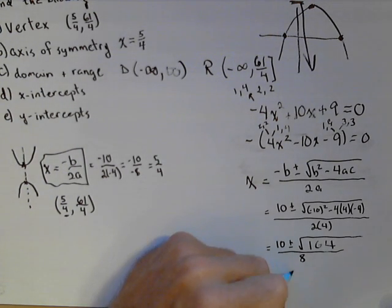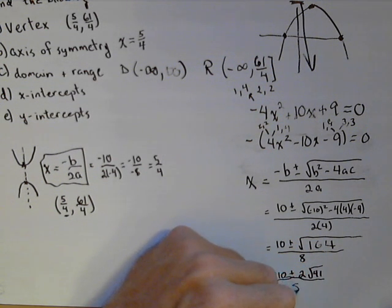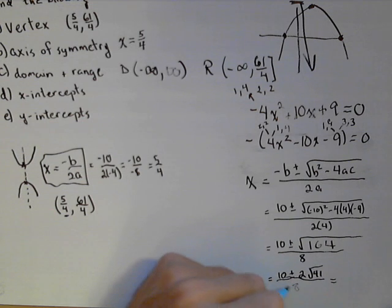So, we get 10 plus or minus 2 times the square root of 41 all over 8. Now, we can divide the top and bottom by a 2. Every term has to get divided by 2.